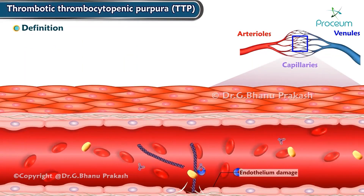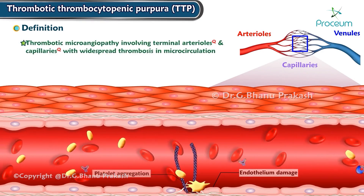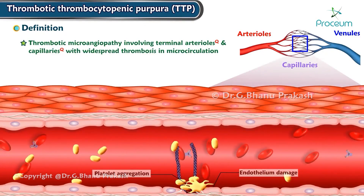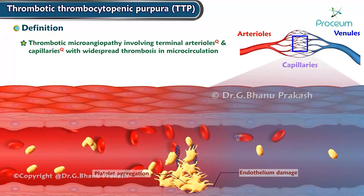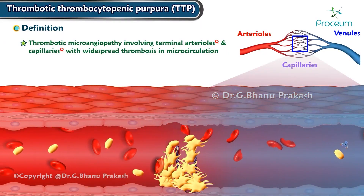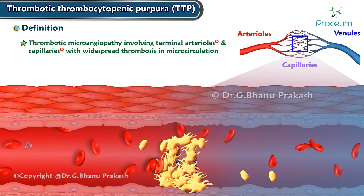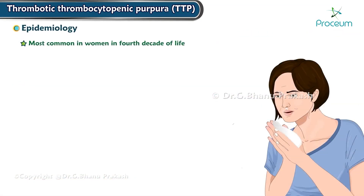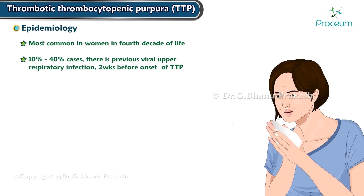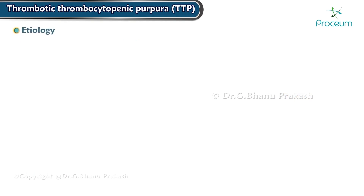Thrombotic thrombocytopenic purpura involves terminal arterioles and capillaries with widespread thrombosis in the microcirculation. It is most common in women in the fourth decade of life. About 10 to 40 percent of cases have a previous viral respiratory infection about two weeks before the onset of TTP.